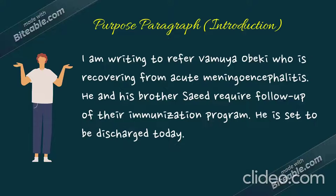The patient is recovering from acute meningitis and encephalitis — no need to write mumps here because the patient has already completed that. The requirement is for him and his brother; note we write 'require' not 'requires' because this involves two patients. They require follow-up of their immunization program. His discharge status: he is said to be discharged today.